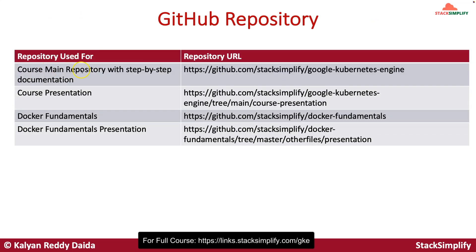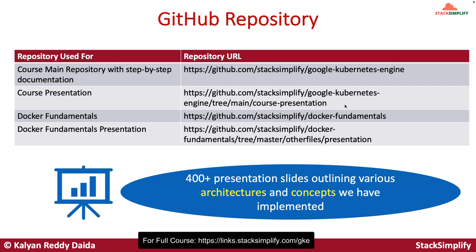The course also has a main GitHub repository with step-by-step documentation available at github.com/stacksimplify/google-kubernetes-engine. The course presentation is also present in the GitHub repository in the folder course-presentation. Inside this presentation, we have 400 presentation slides outlining various architectures and concepts we have implemented. If you are not aware of Docker or are a starter, we have also included a Docker fundamentals section at the end of the course covering what Docker is, how to install it, how to create a Docker image, and how to download a Docker image from Docker Hub.